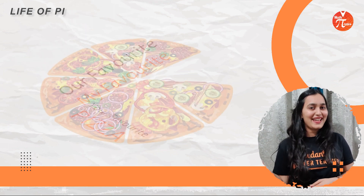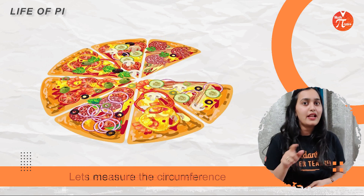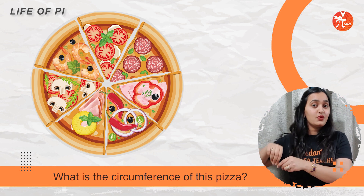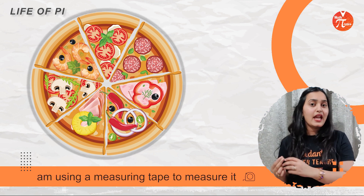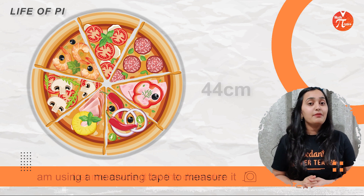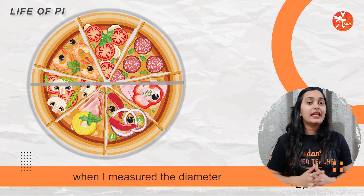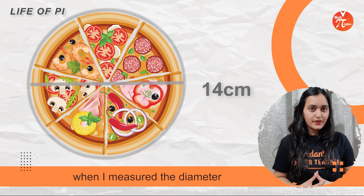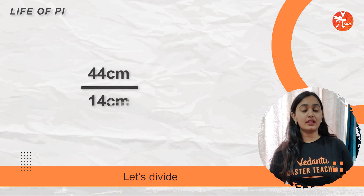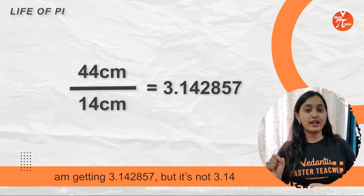Let's take the example of pizza. Let's measure the circumference of this pizza and divide it by the diameter. I am using a measuring tape to measure it and it came out to be 44 cm. When I measured the diameter, it came out to be 14 cm. So when we divide 44 cm by 14 cm, we get 3.142857.